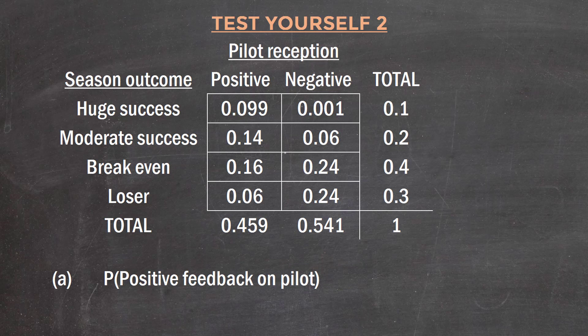So the probability of getting positive feedback on the pilot is simply the sum of that left-hand column, which is 0.459. It's as simple as that. It was asking for a marginal probability and we can just read it off the table.